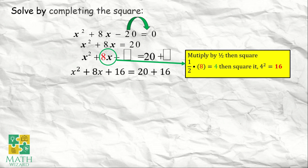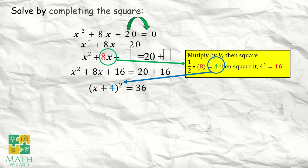After adding 16 to both sides of the equation, the next step is we need to put it in this form: x plus 4 squared is equal to 36. Saan galing si 36? 20 plus 16. Saan galing si x plus 4 squared? If we factor x squared plus 8x plus 16, this can be written as x plus 4 raised to 2. Kapag nalilito ka, yung 4 galing lang yun sa 1 half ng 8. Get the square root of both sides of the equation. This becomes x plus 4 is equal to plus or minus 6.